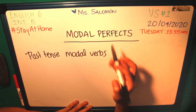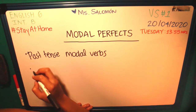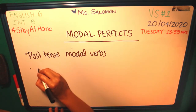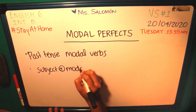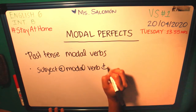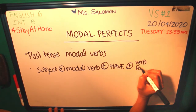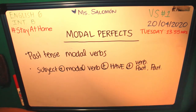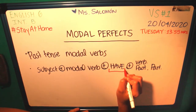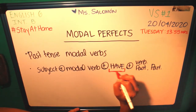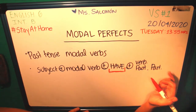Modal perfects in a nutshell: modal perfects are the past tense of modal verbs. They follow this structure — subject, modal verb (whichever we choose), 'have' (it will always be 'have'), and the verb in past participle.